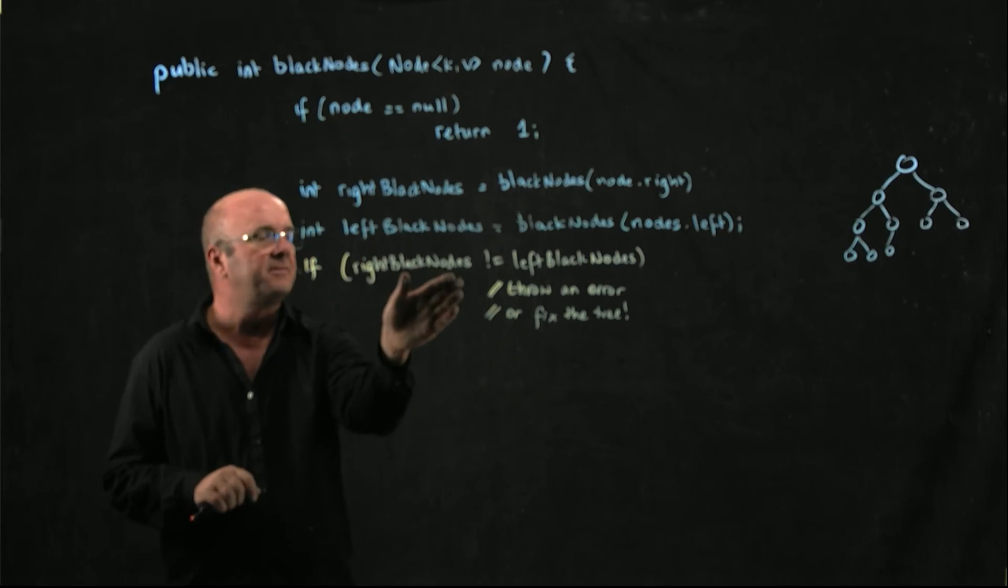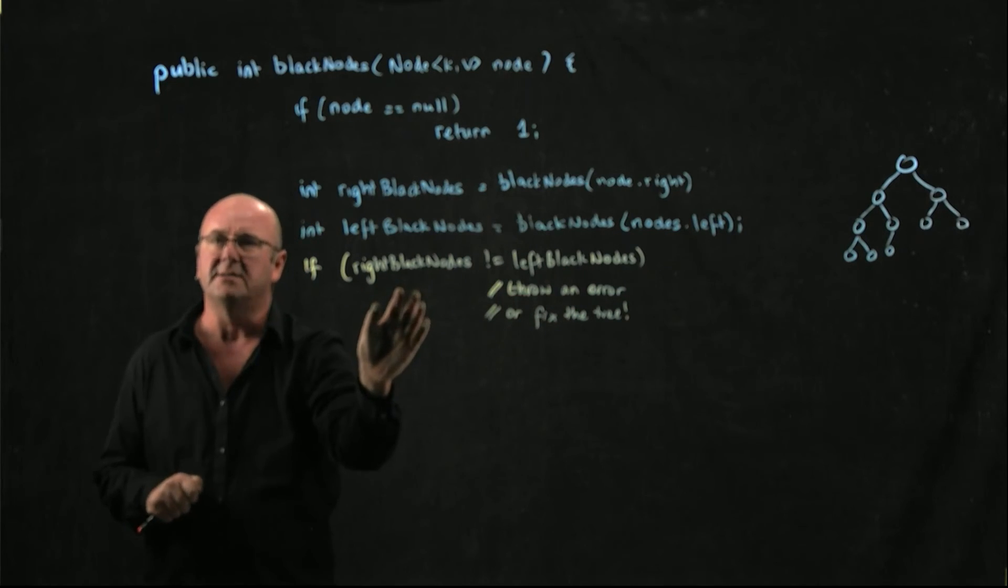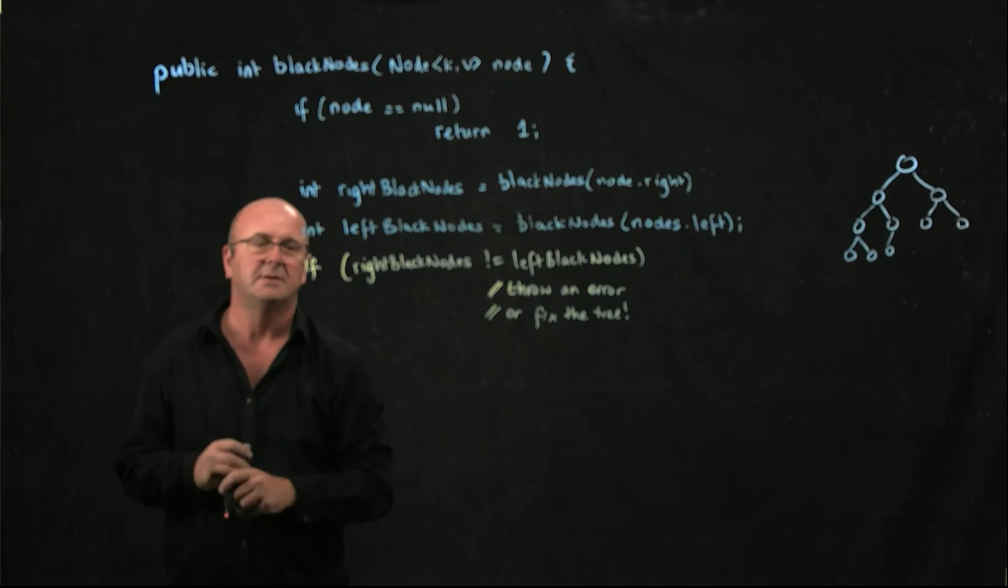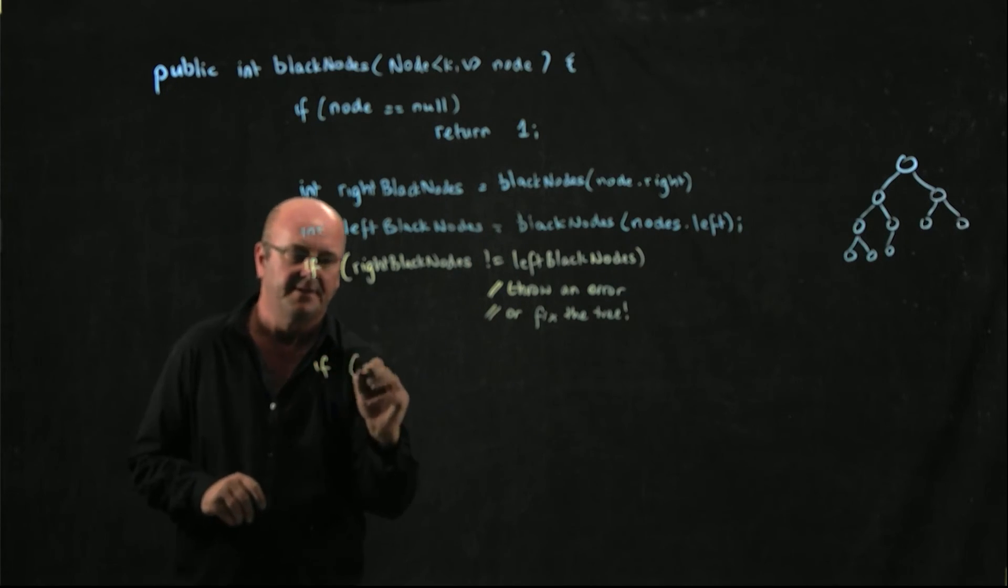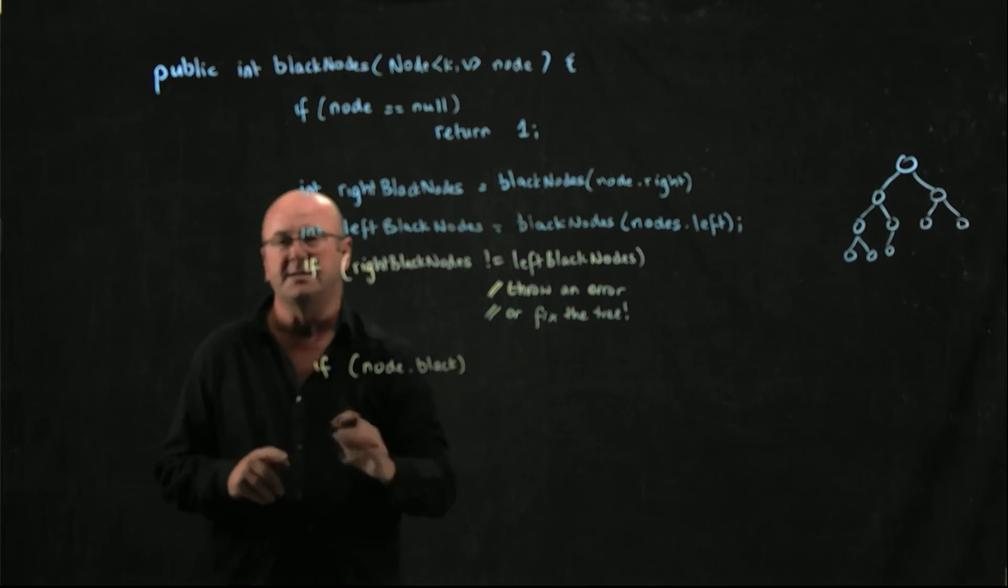Otherwise, if the number of left black nodes and the number of right black nodes are the same, we need to say are we a black node? So if node dot black, then we need to increment one of these.